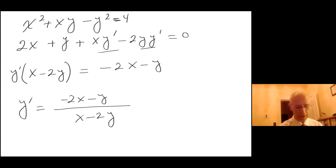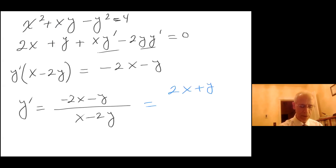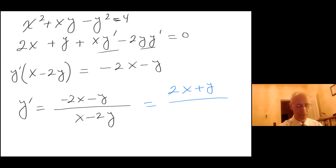So y prime equals minus 2x minus y over x minus 2y. I don't like too many negatives, so multiplying top and bottom by negative 1: the numerator becomes 2x plus y, and the denominator becomes negative x plus 2y.